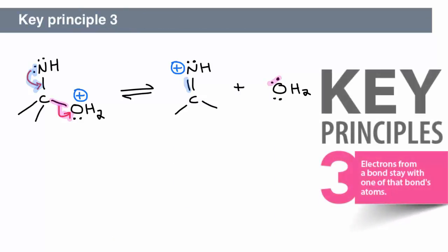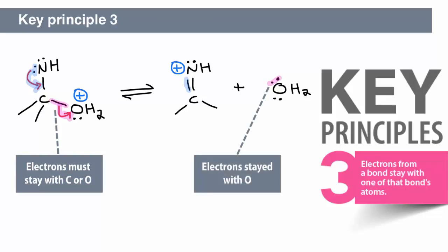This example illustrates key principle number three. Electrons from a bond stay with one of that bond's atoms. The electrons from the carbon-oxygen bond stayed with the oxygen atom, one of the atoms from that bond.